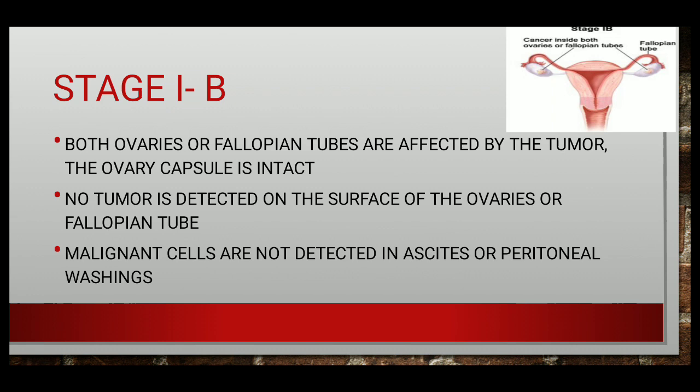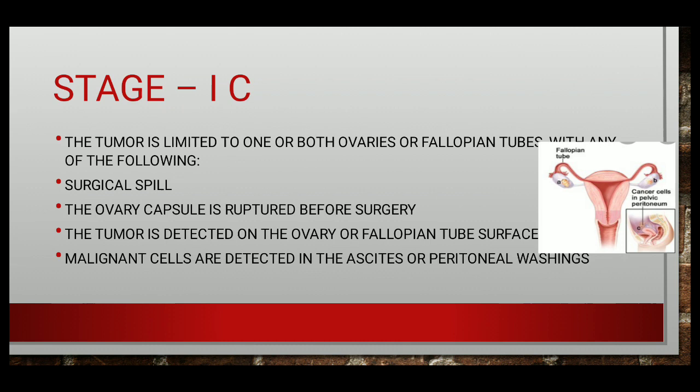In stage 1c, the tumor is limited to one or both ovaries or fallopian tubes with any of the following: the tumor capsule is ruptured before surgery (surgical spill), tumor is detected on the ovary or fallopian tube surface, and malignant cells are detected in ascites or peritoneal washing — so when we send these for cytology we can detect malignant cells.